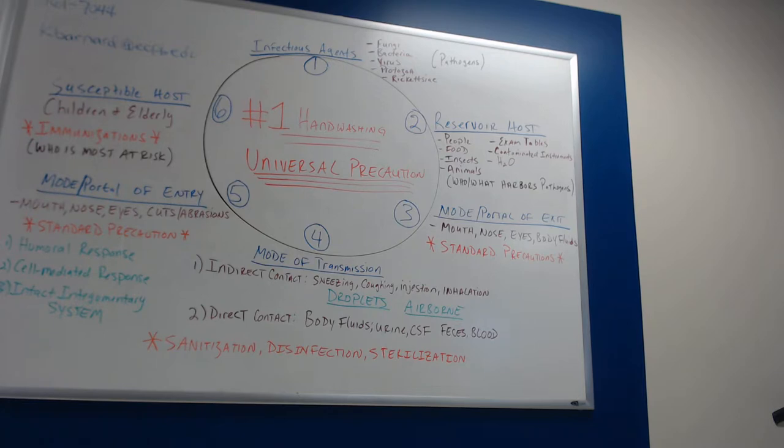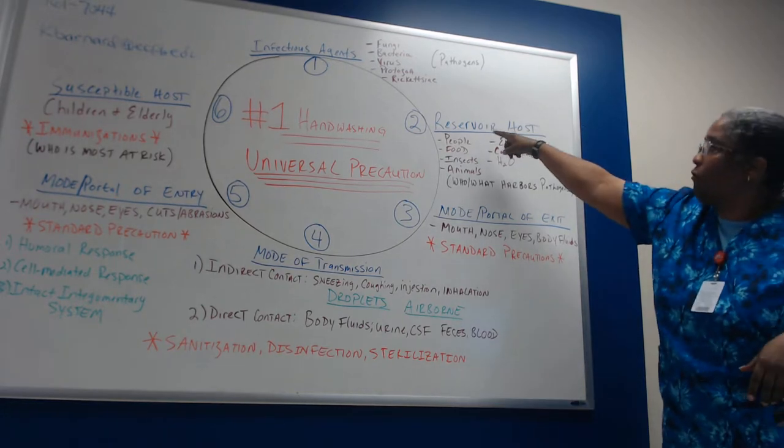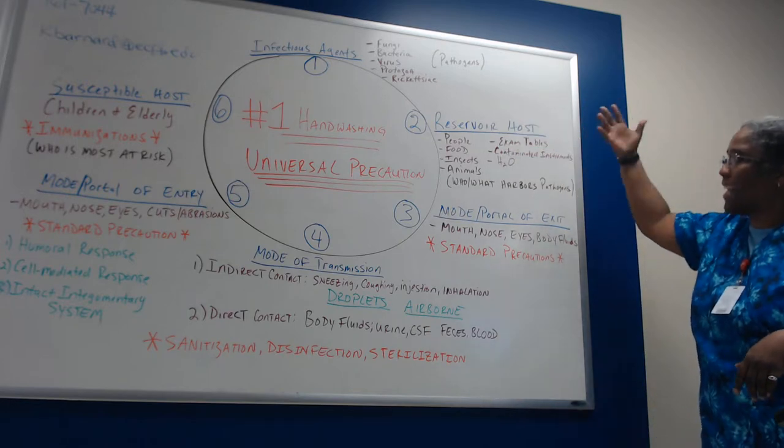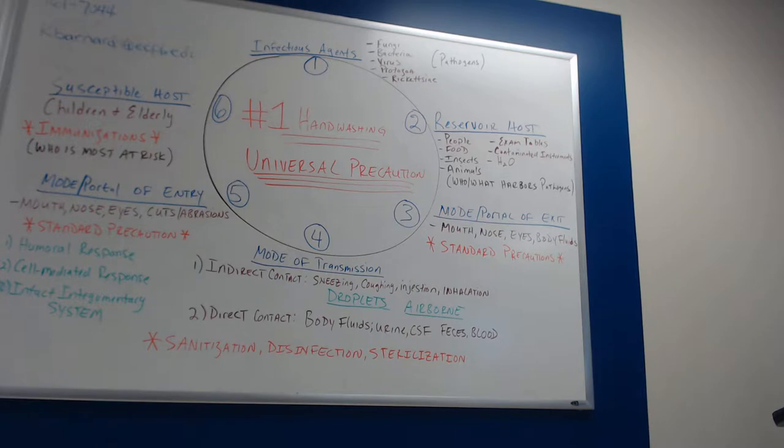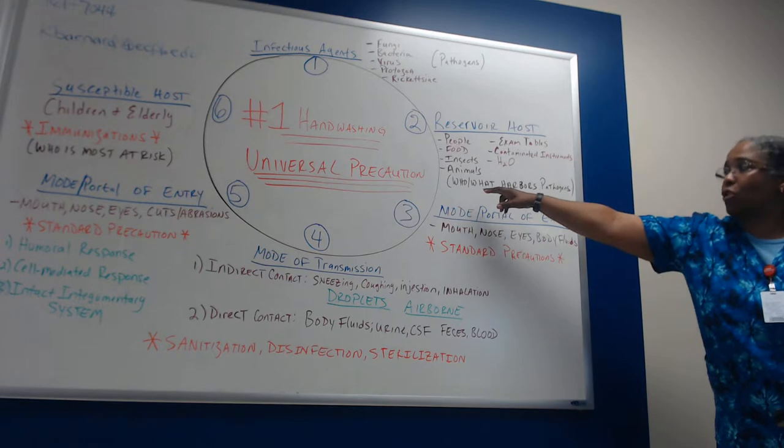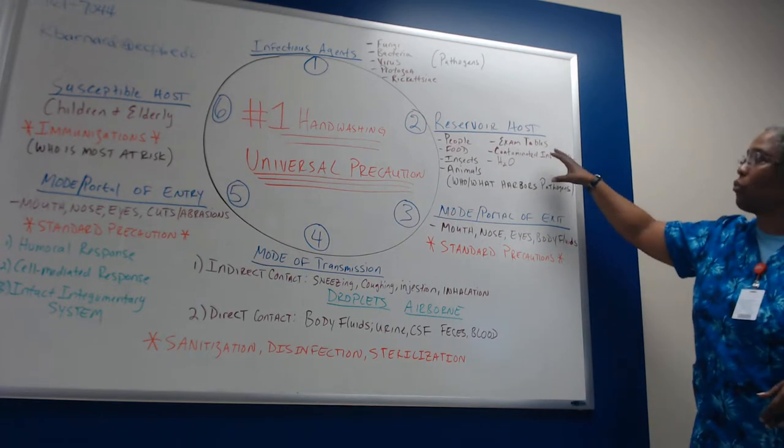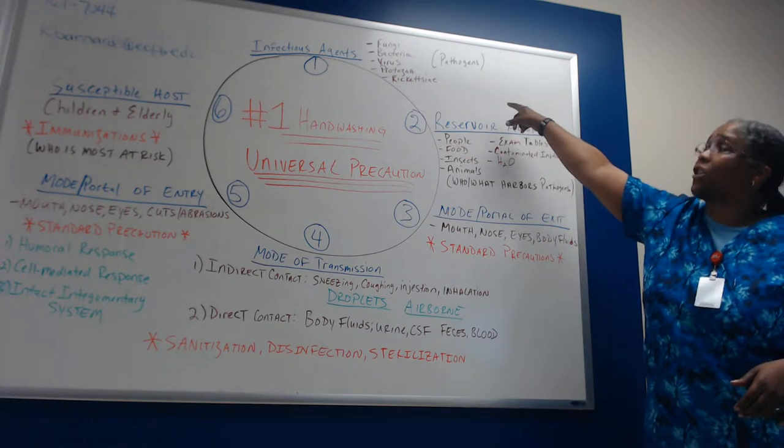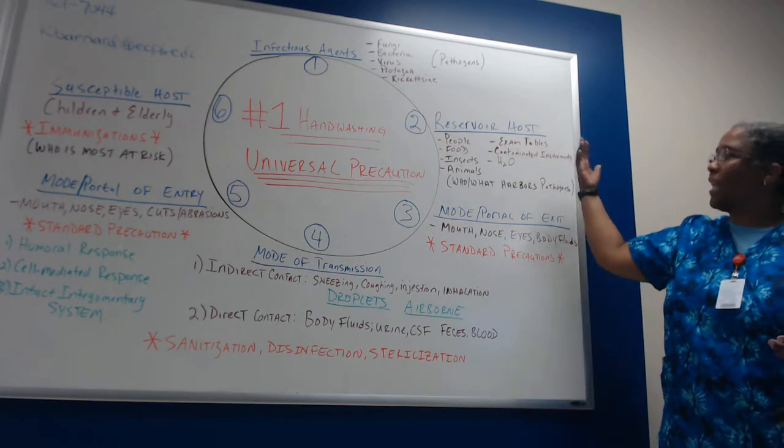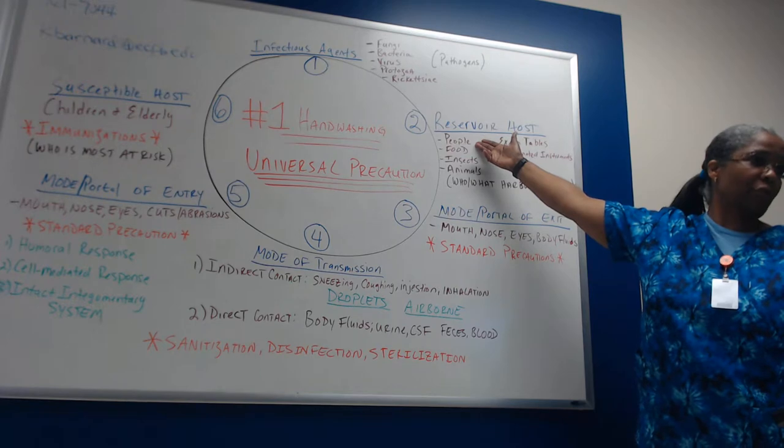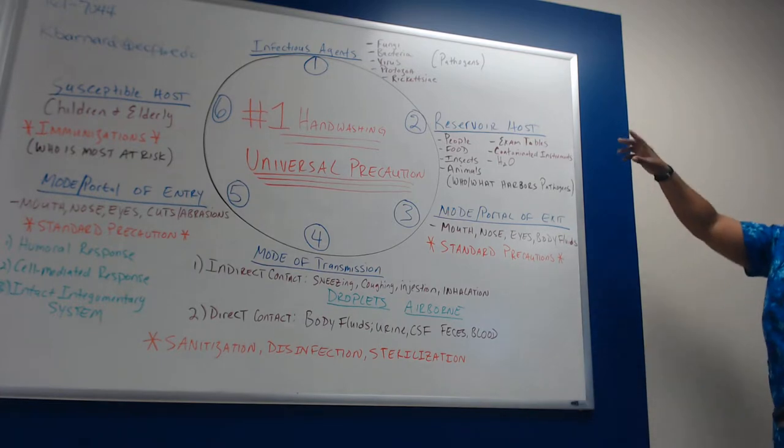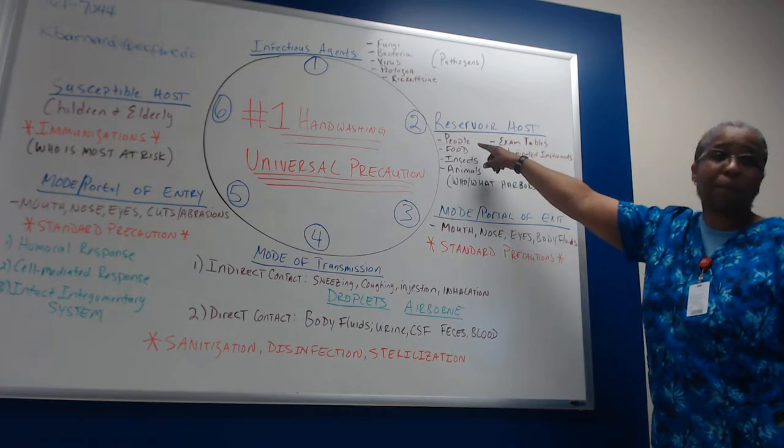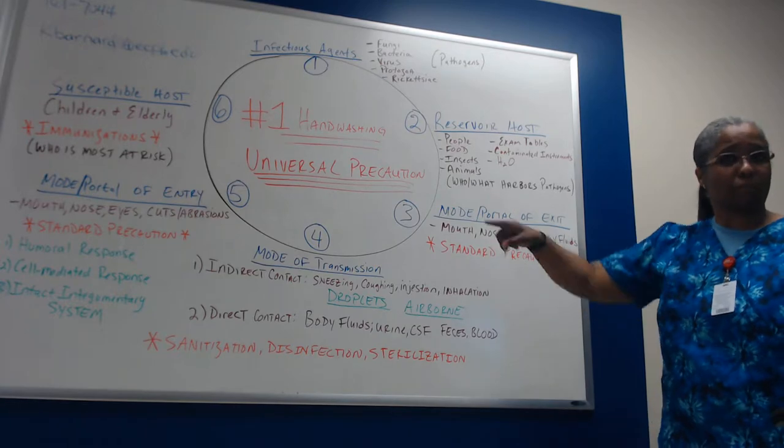How else are they going to be able to be carried but by reservoir hosts? So either people, food, insects, animals, and we talked about some of these insects. It could be like ticks, things like that. Exam tables, contaminated instruments, water. This is who or what harbors the pathogen. So these are types of vices that can actually carry or harbor a pathogen. So let's just use people. We're going to go with people, first one. Human beings. And let's say that we have a bacterial infection. So we're going to go with bacterial infection. We're going to go with people and then we're going to go through the chain of infection.